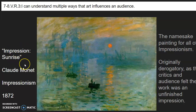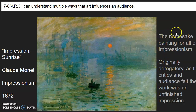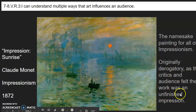He called it Impression Sunrise because he acknowledged this isn't actually what the world looked like — it was his impression of what it looked like. Everybody hated it. They thought it looked like trash, like a scribble, and that Claude Monet was wrong for trying to call this art and hang it in a gallery. That's where the name Impressionism comes from — it all comes from this one painting. The term was originally derogatory, meaning a word that is meant as an insult to make someone feel bad.